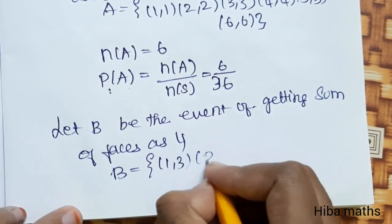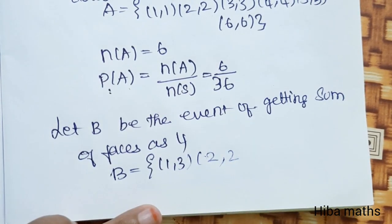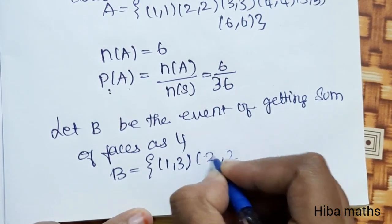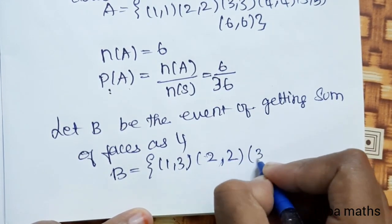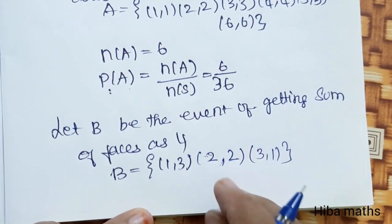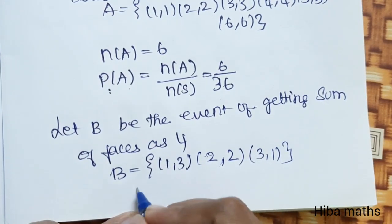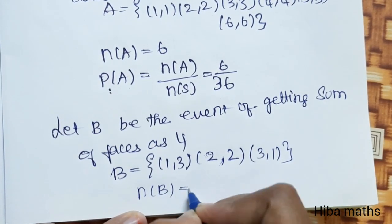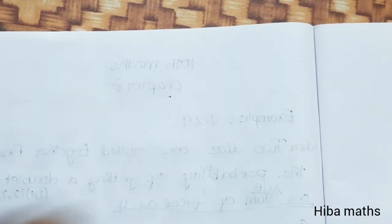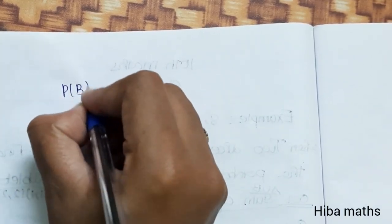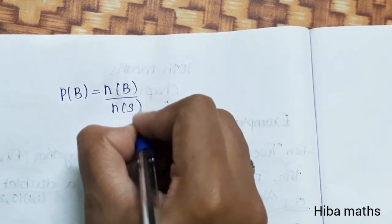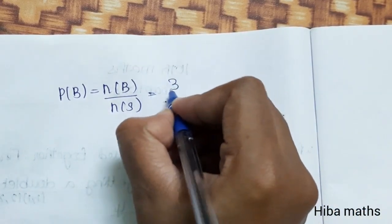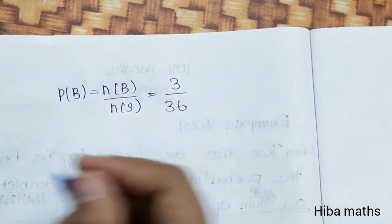Writing event B: 1,3, 2,2, 3,1. So there are three possibilities. N of B is equal to 3. Probability of B is equal to N of B by N of S, which is 3 by 36.